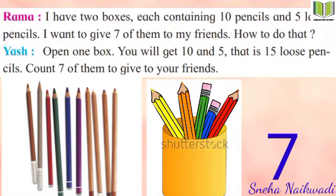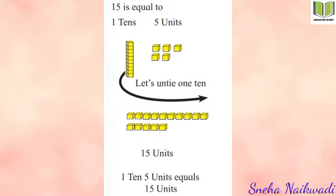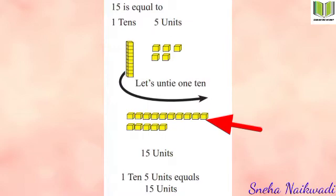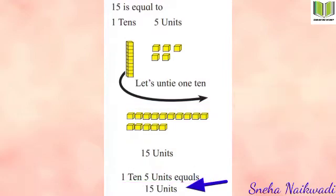Now let's see one more example. 15 equals one ten and how many units? Five. So one bundle of 10 and five loose ones. Now let's untie that one 10 — we open it up and make it loose. See the total units: that is 15 units. So one ten and five units together make 15 units.